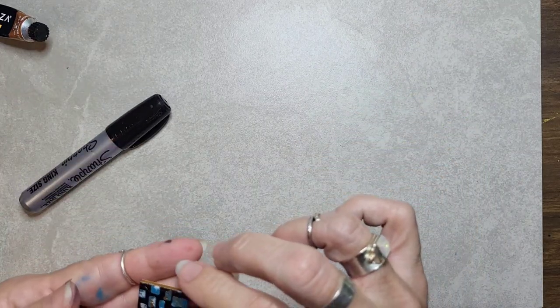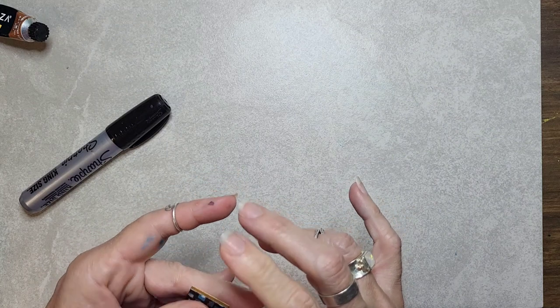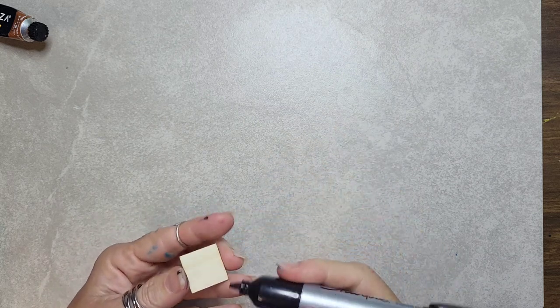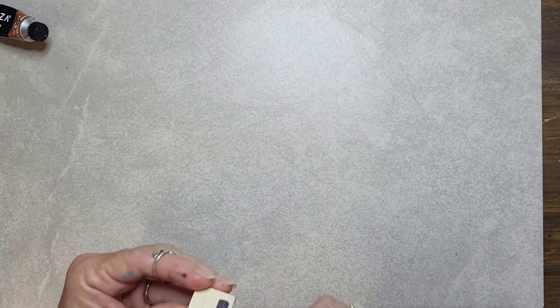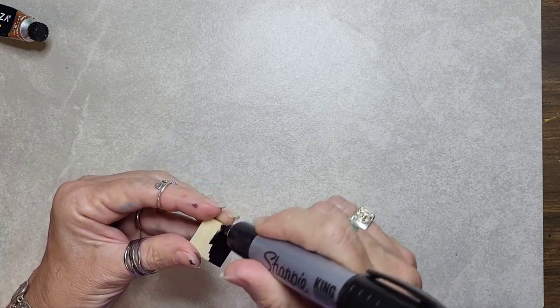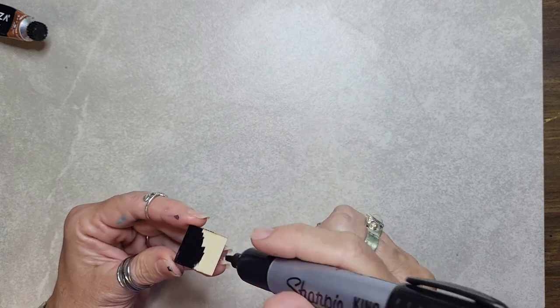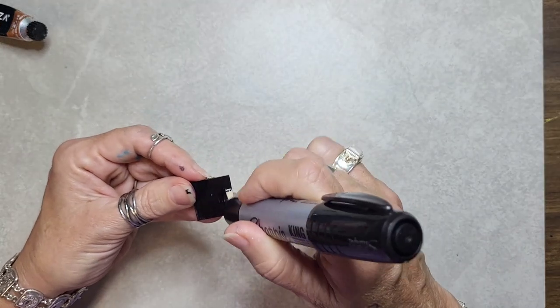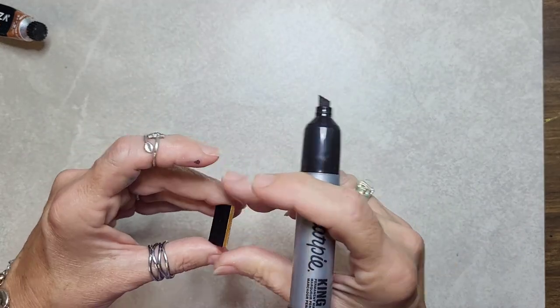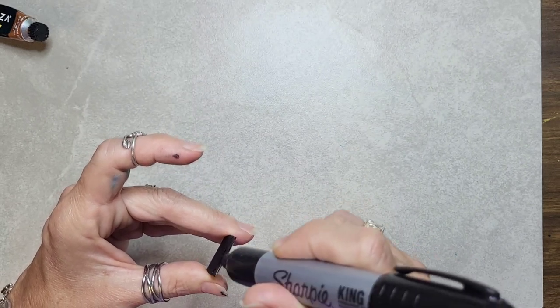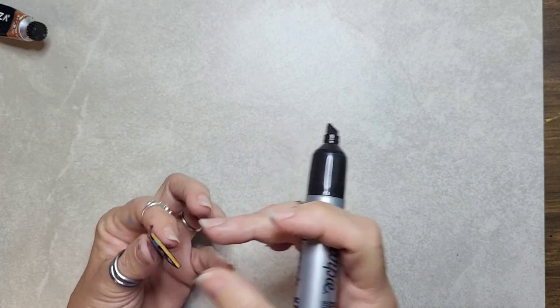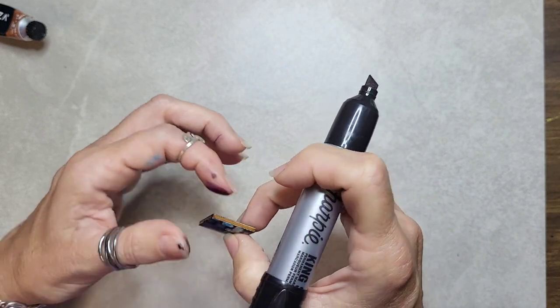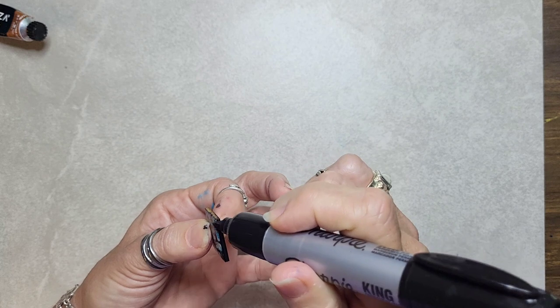So for the back, if you want, we're just going to Sharpie the back too. Literally just Sharpie the back. That's all that needs to be done. And I'm going to do the sides as well, but it just kind of makes it look finished. And I love framing out the edges because that really makes it look finished. If you don't do the back, at least do the edges.